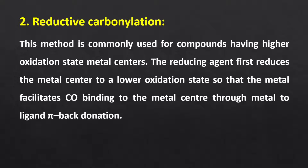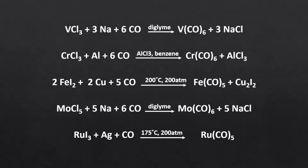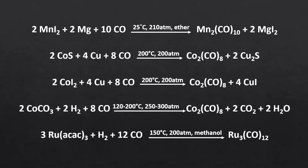The second method is reductive carbonylation, commonly used for compounds having a higher oxidation state metal center. The reducing agent first reduces the metal center to a lower oxidation state so that the metal can facilitate carbonyl binding through metal-to-ligand pi-backdonation. Many metal carbonyls are obtained when their salts are treated with carbon monoxide in the presence of suitable reducing agents like magnesium, silver, copper, sodium, hydrogen, etc. As shown in the slides, salts of vanadium, chromium, iron, molybdenum, and ruthenium get reduced to their neutral oxidation state and form their corresponding mononuclear carbonyl complexes; and compounds of manganese, cobalt, and ruthenium form their corresponding polynuclear carbonyl complexes.